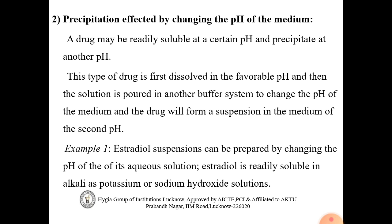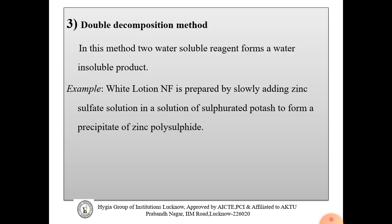In summary for the pH method: first, the drug is dissolved in a solvent at a pH where it is soluble. Then the solution is poured into another buffer system to change the pH, causing precipitation and forming a suspension. The third method is the double decomposition method.